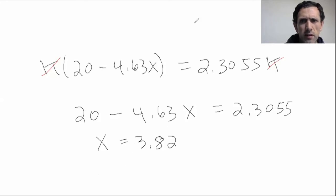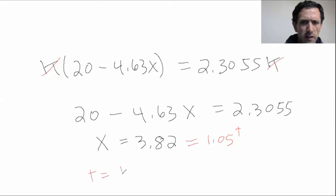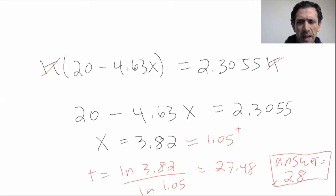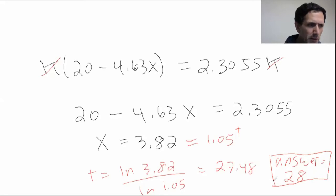Remember what X is — we set it to be 1.05^T. So you get T = ln(3.82) / ln(1.05), and that is 27.48. So your answer is after 28 years, or in other words after 28 payments — that is when you first have an outstanding balance less than 15% of the original loan amount.